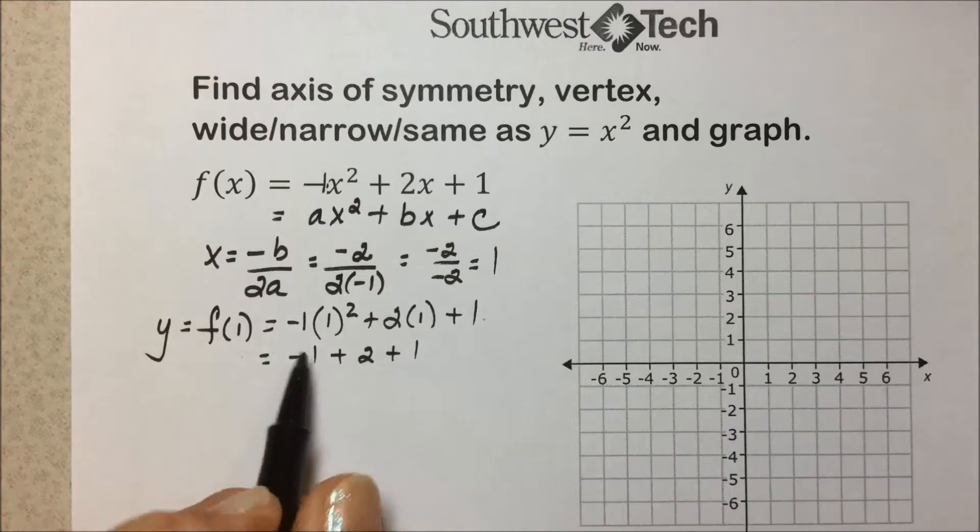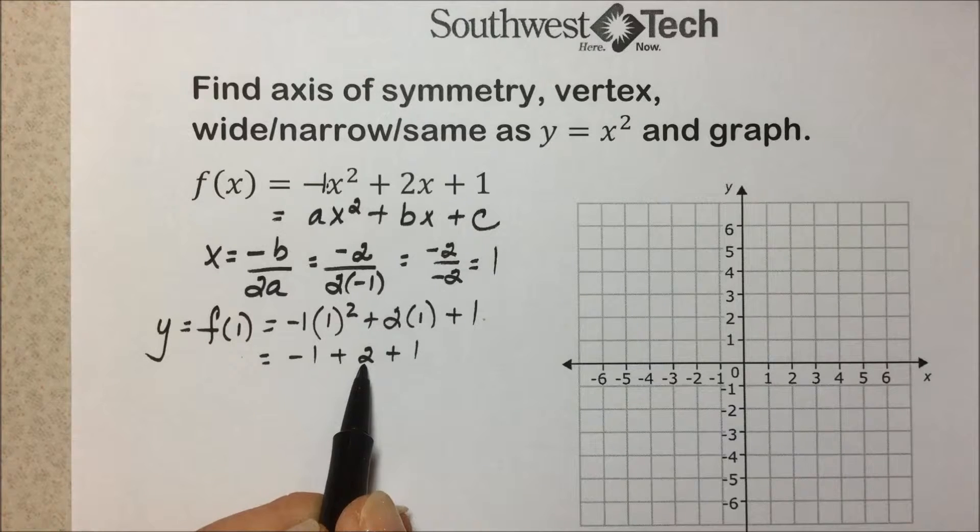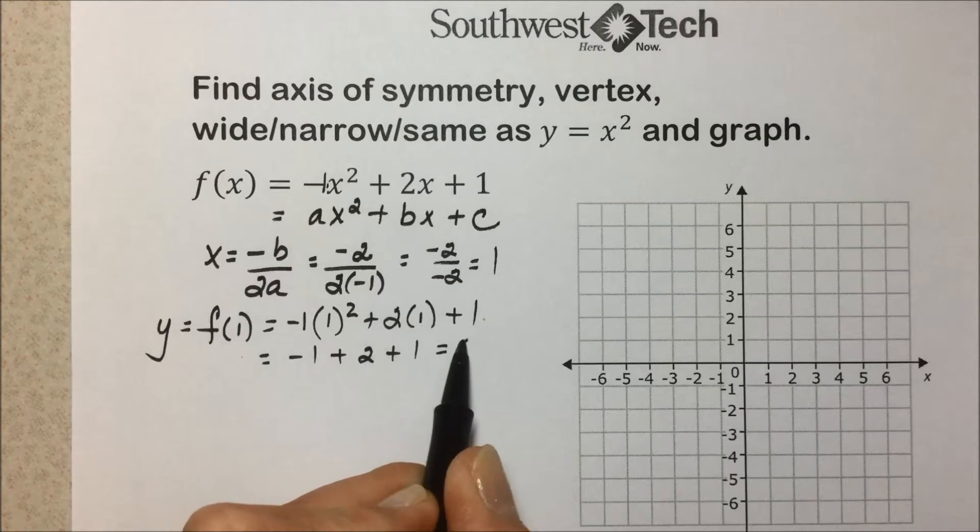1² is 1 times -1 is -1. Multiply is 2 plus 1. -1 plus 2 is 1. 1 plus 1 is 2.